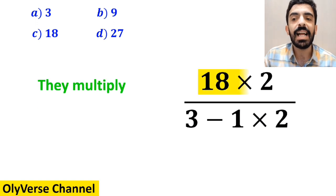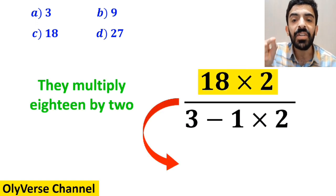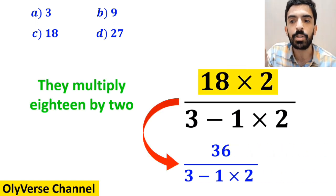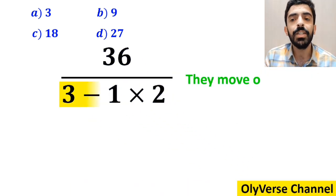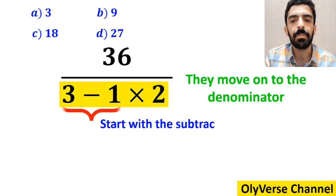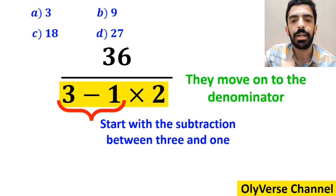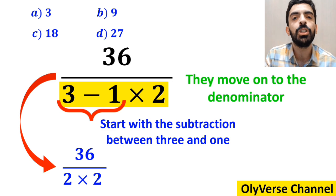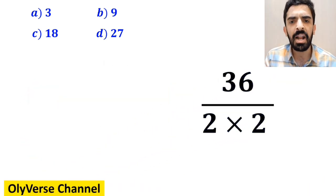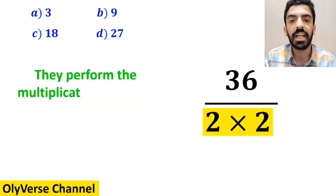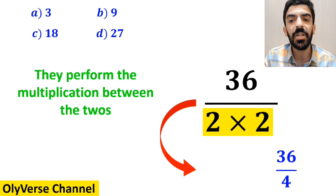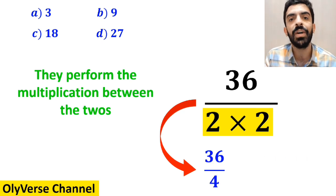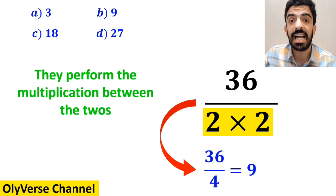In the next step, they multiply 18 by 2 and simplify this fraction to 36 over 3 minus 1 times 2. Then, they move on to the denominator and start with the subtraction between 3 and 1. So, instead of this expression, they rewrite it as 36 over 2 times 2. In the final step, they perform the multiplication between the 2's and simplify this expression to 36 over 4, which finally gives them the answer 9.